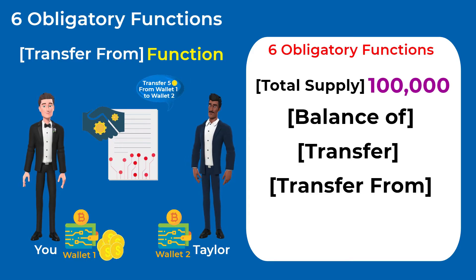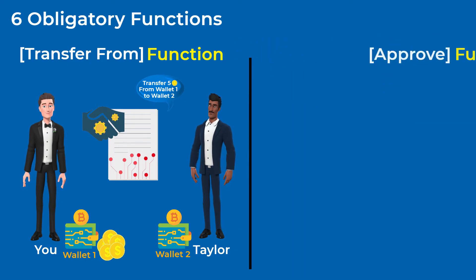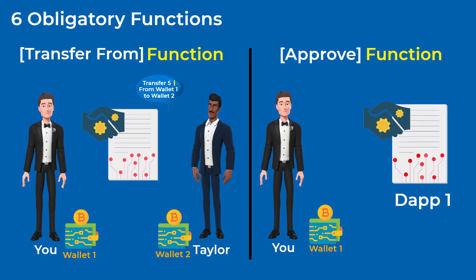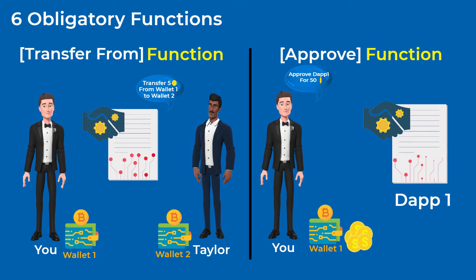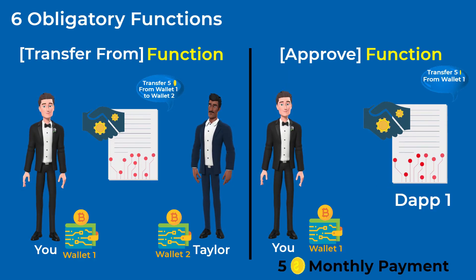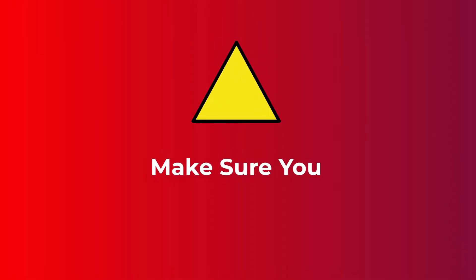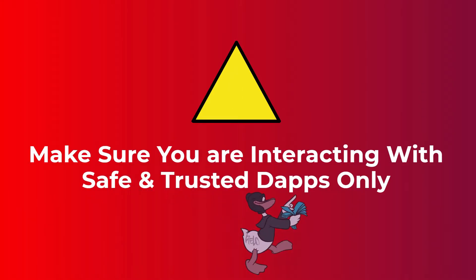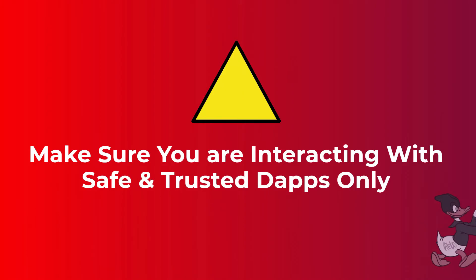You give this third party permission using the Approve function, which allows a smart contract or a DApp to take a specified amount of tokens from your wallet. For example, you may use a DApp that requires monthly payments, so you approve the smart contract and set the amount to a large number, allowing the DApp to take its monthly payment automatically from your wallet. It's important to make sure you are interacting with safe and trustworthy DApps only, as there are a lot of scams done this way in the crypto world.